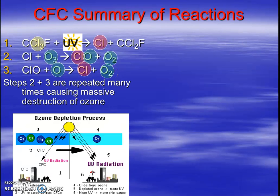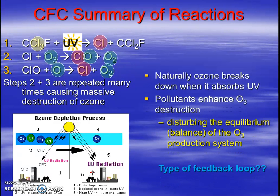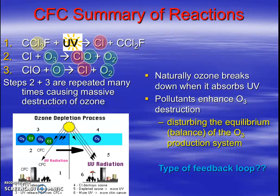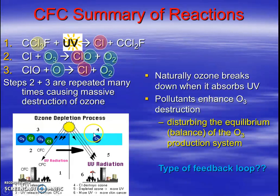This is terrible. This is massive destruction to ozone. Naturally ozone will break down when it absorbs UV, but this pollutant enhances the O3 destruction and it disturbs equilibrium. So this is unstable equilibrium. It is a positive feedback loop because it goes further and further away from equilibrium — the more CFCs we have, the more chlorine atoms stealing those O atoms away from reforming ozone, leaving us with less and less ozone in the stratosphere.